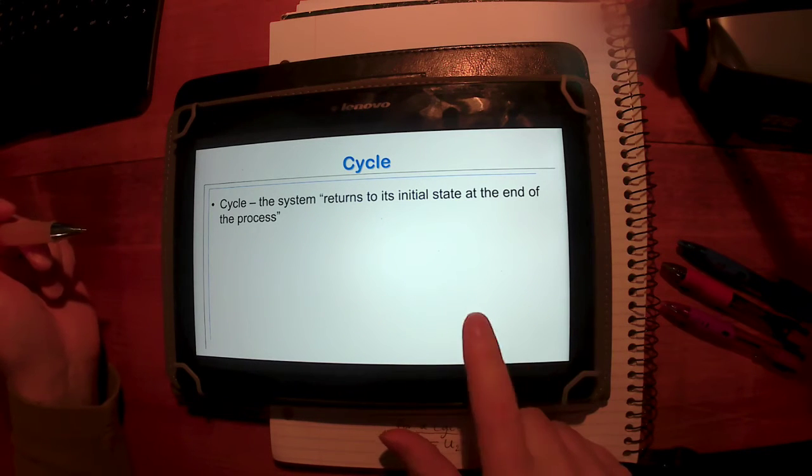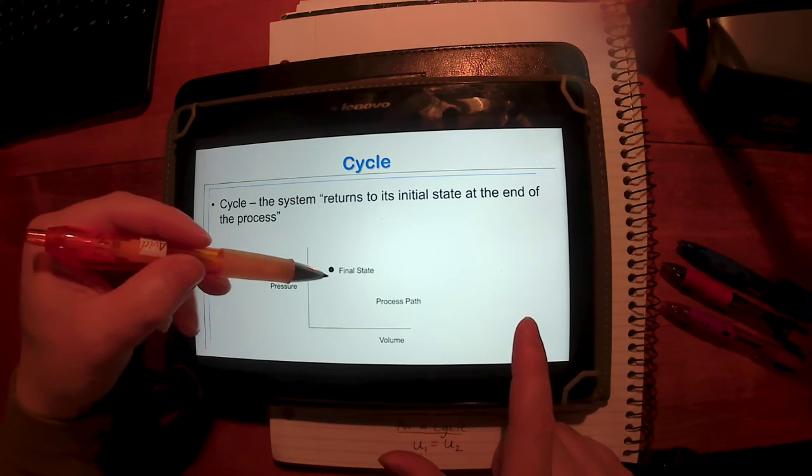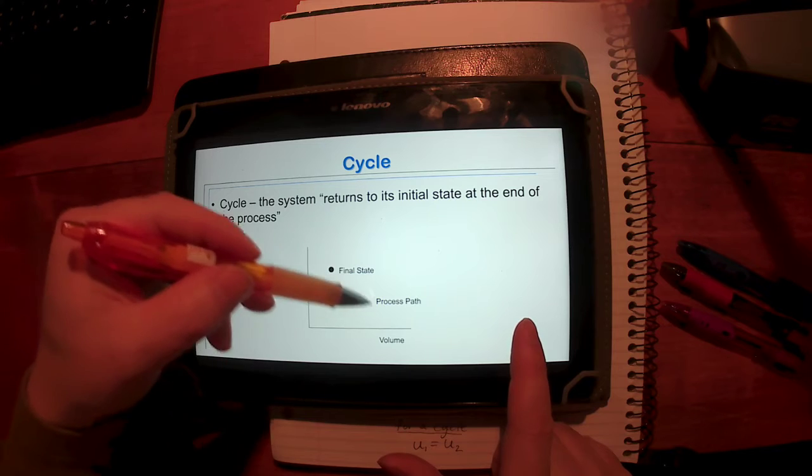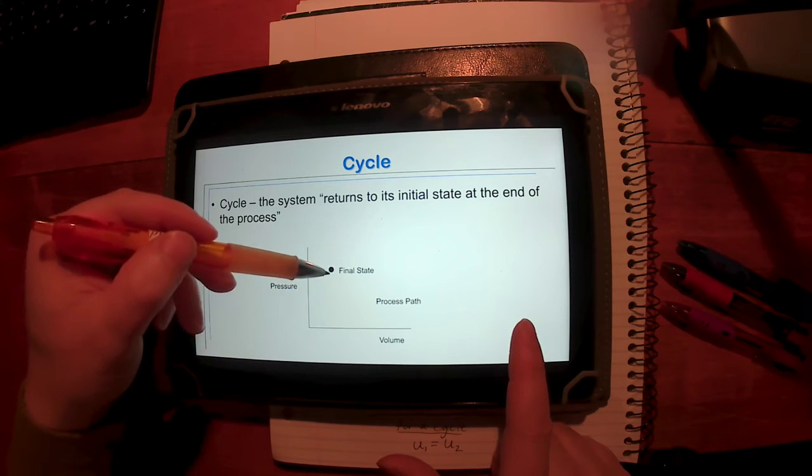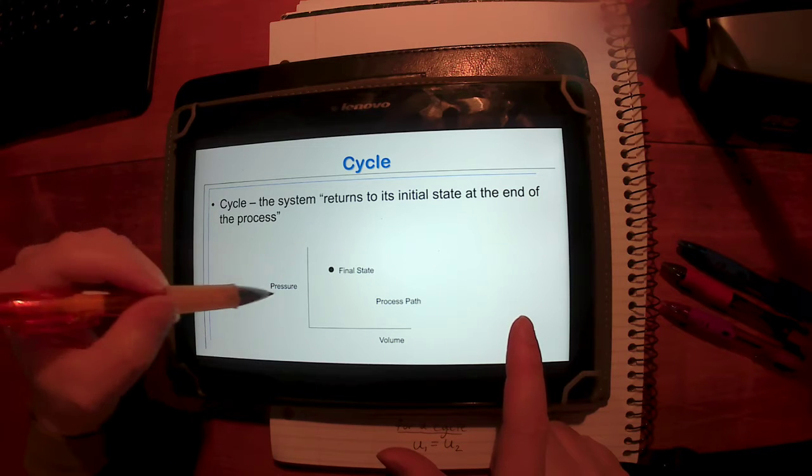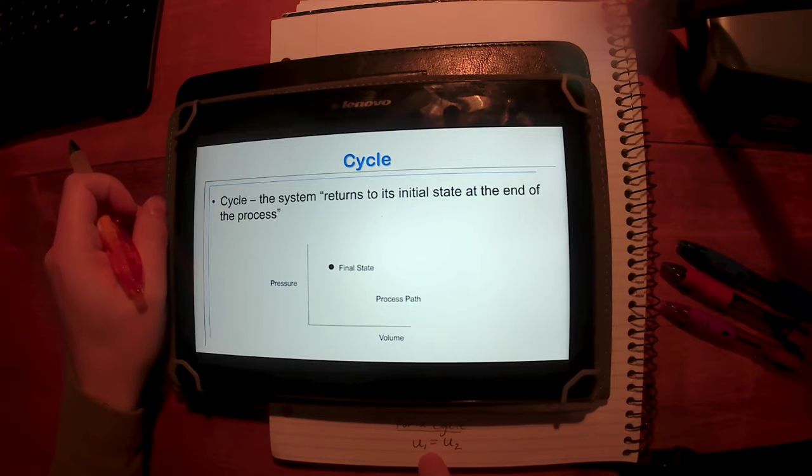And cycle means the process returns. I'm used to having a smart board where I can draw on this. I don't have it here. So I would normally just draw a cyclic loop. So the pressure and the volume will start here, we'll go around and come back to the same point. So if the pressure and volume is the same, that means internal energy is going to be the same.